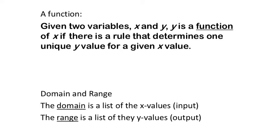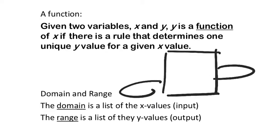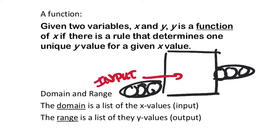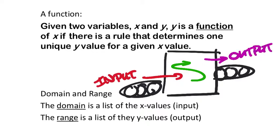Functions are like machines that, well, function. They used to show this on like a conveyor belt. If you put something in — that's the input — it would run through this machine, and then it's going to punch out something which would be the output.